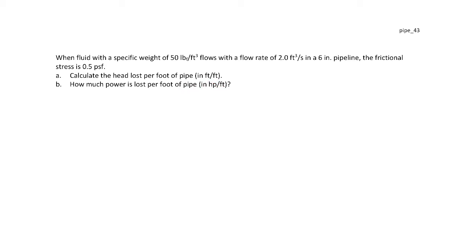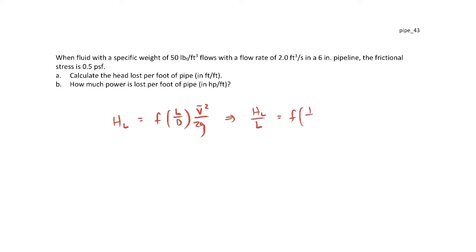We're trying to find the head loss per foot of pipe. The head loss here is the major head loss due to viscous effects, which is the friction factor times L over D times the velocity head. Rearranging that to solve for the head loss per unit length is straightforward.